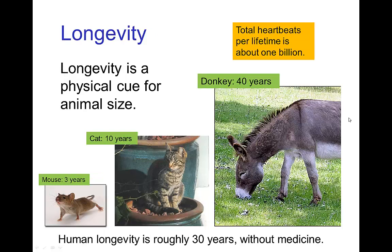Similarly, longevity is a physical cue for size. Small animals tend to have short life spans, while large animals have significantly longer life spans. In essence, the heart has about 1 billion heartbeats before failure, so the failure rate is about the same for all animals. But since small animals run through their heartbeats much faster, they tend to have shorter life spans.